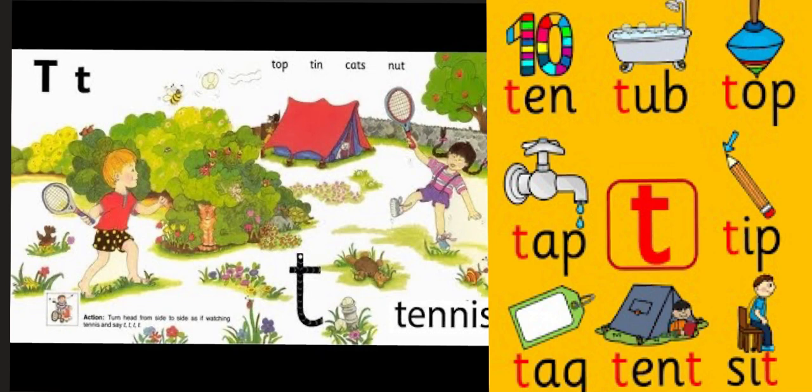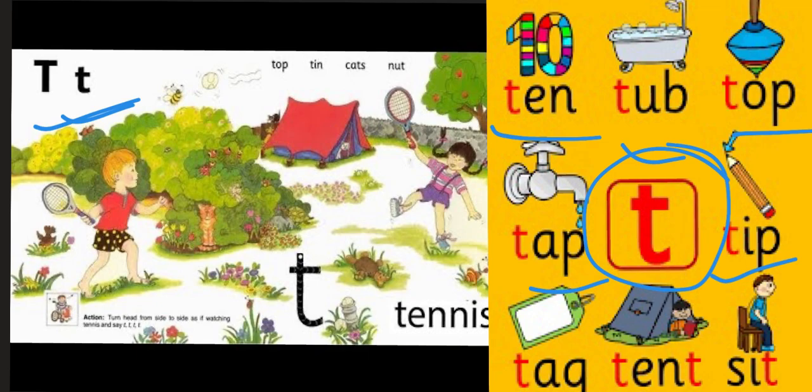Okay, so like I've mentioned before, the first letter sound for this week is t, t, t, for tennis. T, ten. T, tab. T, top. T, tap. T, tip. T, t, t. Good job.